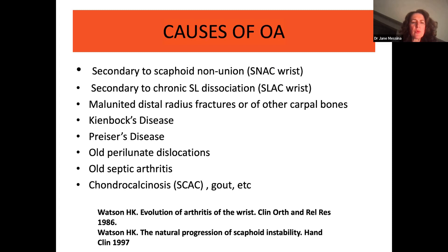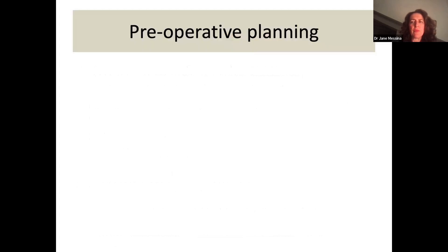Watson described in 1986 the evolution of arthritis of the wrist. He is a pioneer in these studies and has studied the natural progression of scaphoid instability and the pattern of development of arthritis.